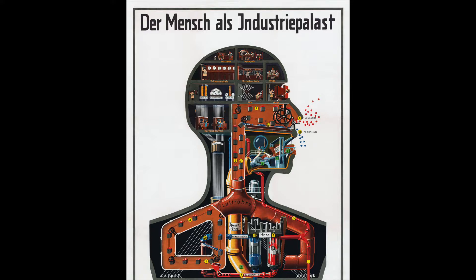The central term for the exhibition is the term technical image. A technical image is simply an image that's made with the aid of mechanical apparatus, produced in some way automatically. Everything from a photograph to a silkscreen, to even classic perspectival form, which is mathematically derived from geometry, could be considered in a sense a technical image.